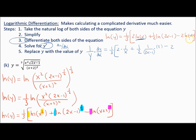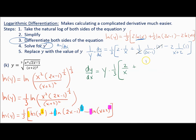Looking inside, the two 2's cancel. Step 4: solve for dy over dx by multiplying both sides by y. So dy over dx equals y times 1 third times 2 over x plus 1 over 2x minus 1 minus 2 over x plus 2.